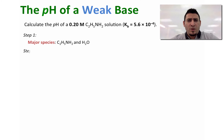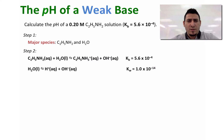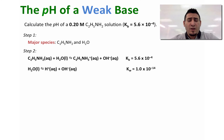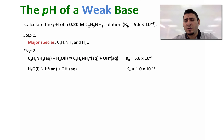In step two, we have to write the equilibria happening in water. We have the reaction of ethylamine with water that will give C2H5NH3⁺ plus OH⁻. Now C2H5NH3⁺ is the conjugate acid of ethylamine, which is a base. We also have the autoionization equilibrium of water. The Kb is equal to 5.6 times 10 to the power minus 4, and the Kw is equal to 1.0 times 10 to the power minus 14.